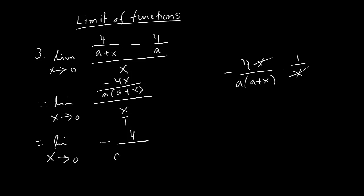So you are getting this one as limit x goes to 0, negative 4 over a and then a plus x. Now when I replace x by 0, I get negative 4 over a times a, so you get negative 4 over a squared. So that's your final result for this limit. Thank you.